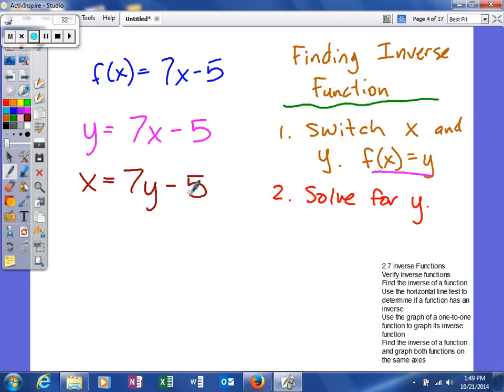At this point in time, we've completed step number one, so next what we're going to do is we're going to solve for y. So to do that, you just undo what's being done to your variables. We'll add 5 to both sides, and we'll get x plus 5 is equal to 7y. And then next to get y by itself, we'll divide each side by 7. So we get y is equal to x plus 5 over 7.